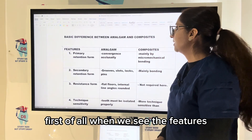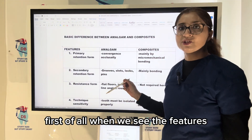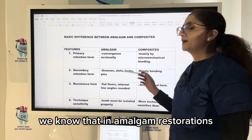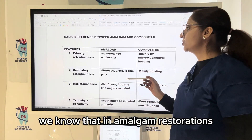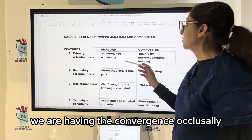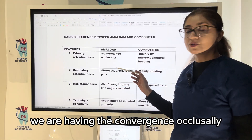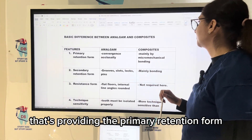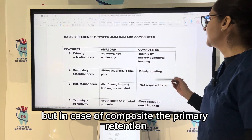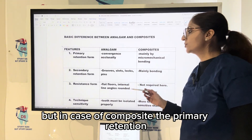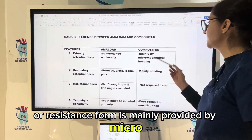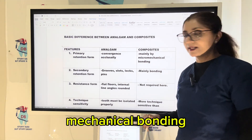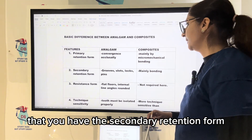First of all, when we see the features between amalgam and composite, we know that for amalgam restorations we have convergence occlusally, which provides the primary retention form. But in case of composite, the primary retention or resistance form is mainly provided by micromechanical bonding.